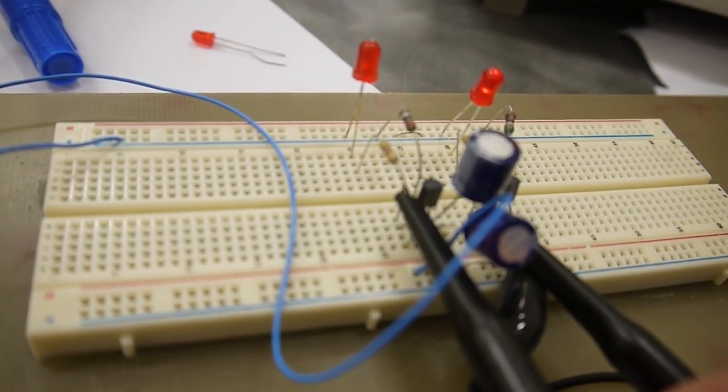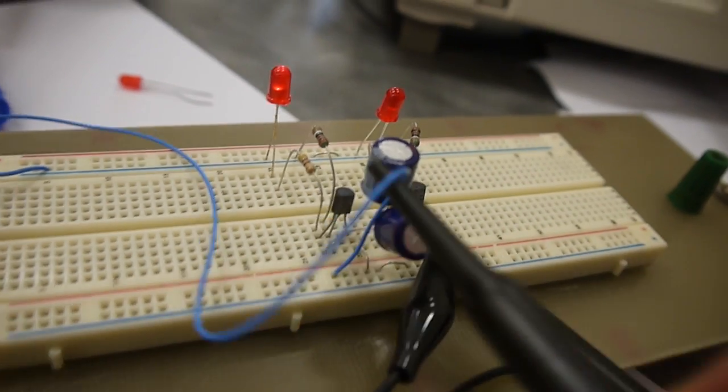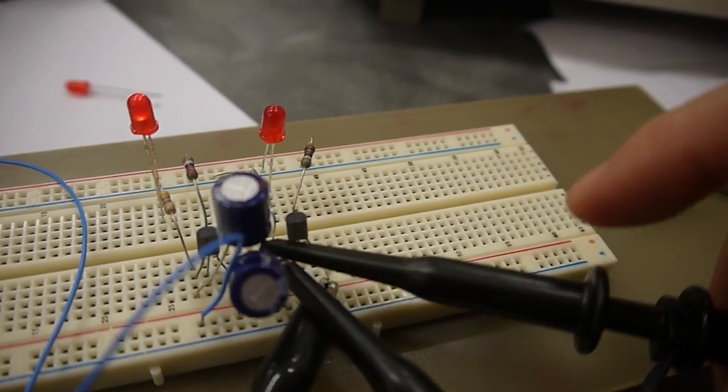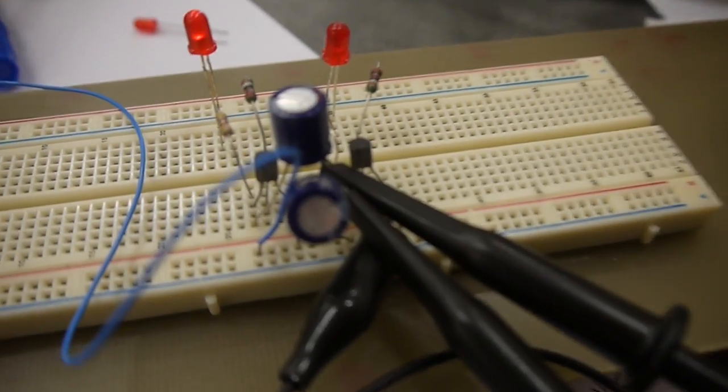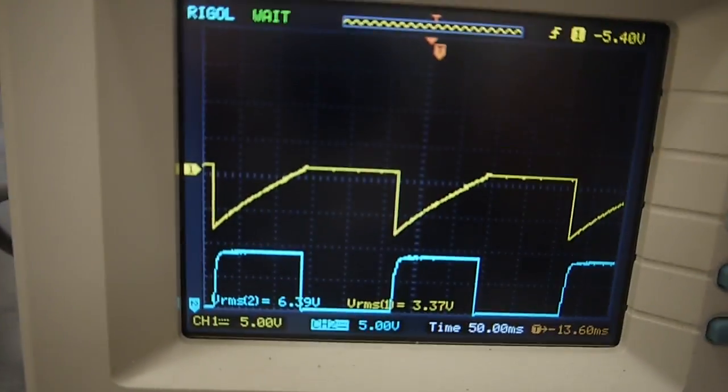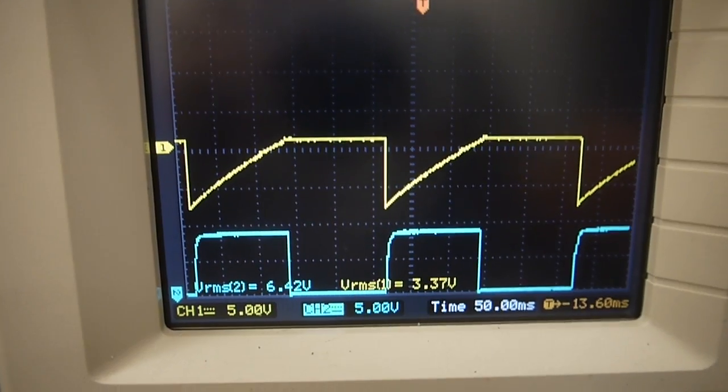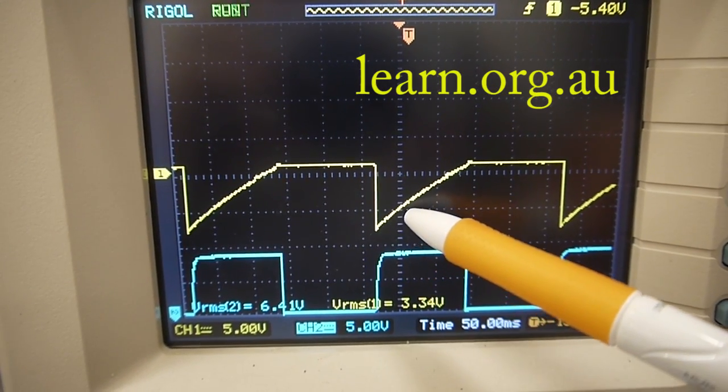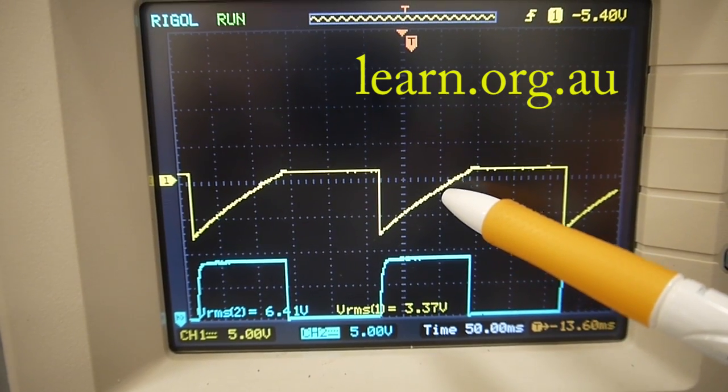Now, if I just quickly move the oscilloscope probe from the collector on Q1 and put it across onto the collector of Q2, there it is there now. And now we look at these waveforms again, we can see that as the capacitor charged up over that one time constant,